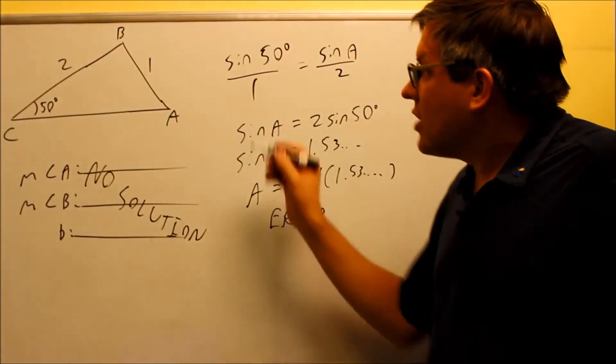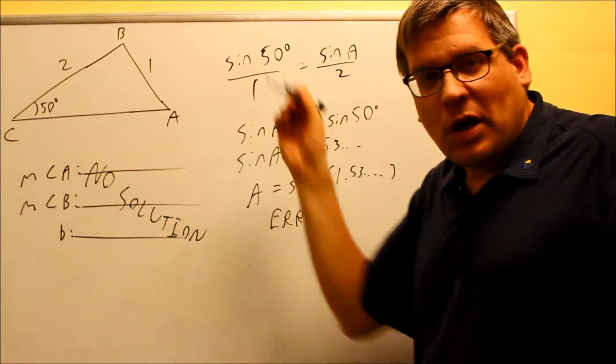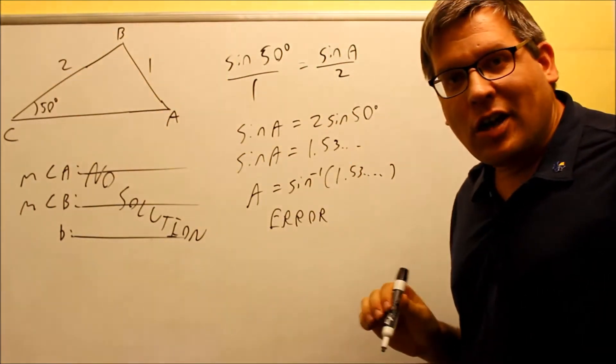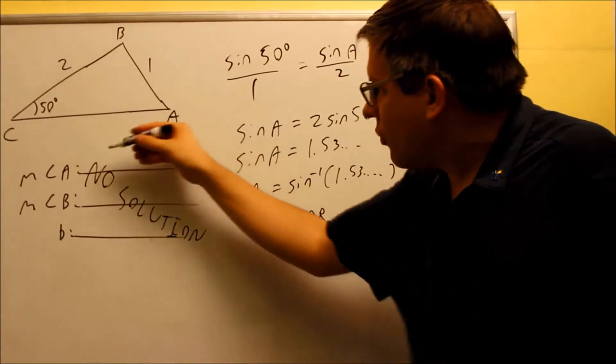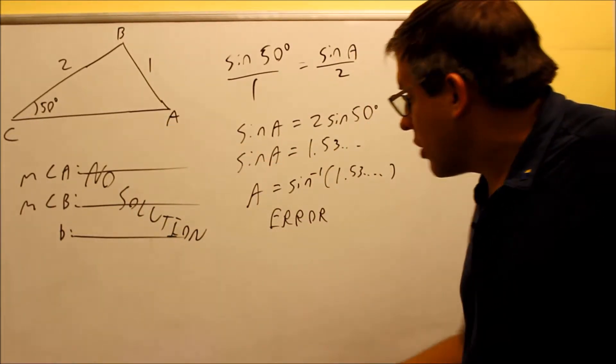So you may see problems written out this way in a text or online, and it's basically a lie. It's basically telling you that the triangle can be drawn when, in fact, it actually can't. We actually proved through the algebra that it's not possible to draw that one.